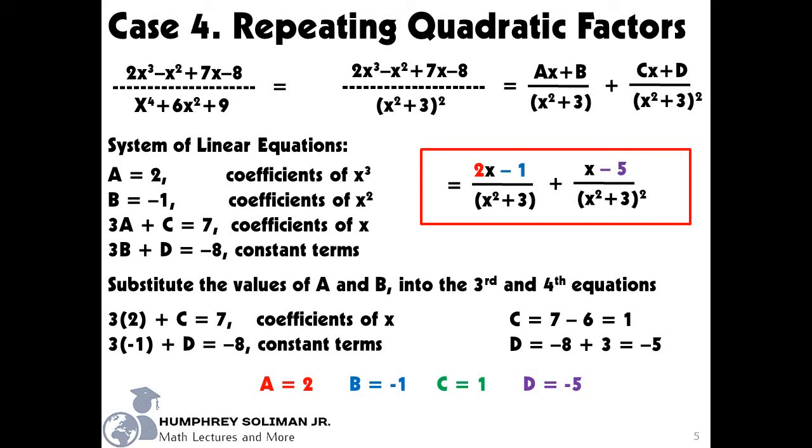Our final answer in decomposing the rational expression into partial fractions is the quantity 2x minus 1 over the quantity x squared plus 3, plus the quantity x minus 5 over the square of the quantity x squared plus 3.